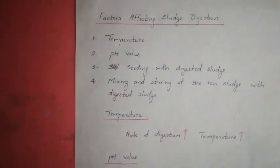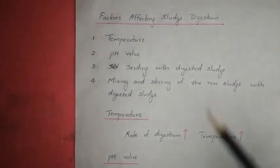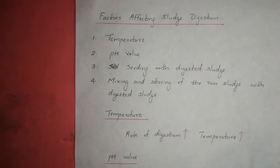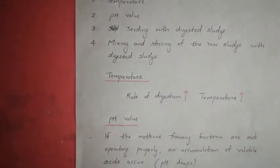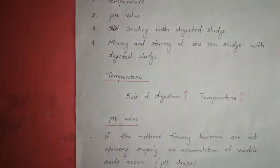Now we will move on to the factors affecting sludge digestion. The important factors are temperature, pH value, seeding with digested sludge, and mixing and stirring of raw sludge with digested sludge. The rate of digestion is proportional to temperature — this process is greatly influenced by temperature, as digestion occurs faster at higher temperatures.